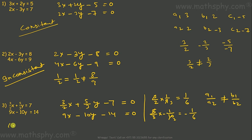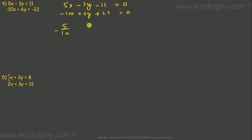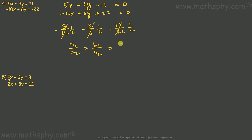Fourth pair: 5x - 3y - 11 = 0 and -10x + 6y + 22 = 0. Here a1/a2 = 5/(-10) = -1/2, b1/b2 = -3/6 = -1/2, c1/c2 = -11/(-22) = 1/2. Since a1/a2 equals b1/b2 equals c1/c2, this gives coincident lines — the system is consistent.